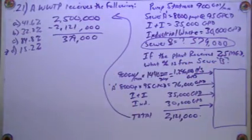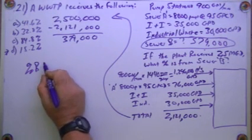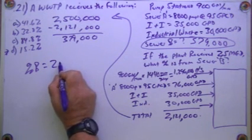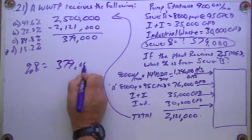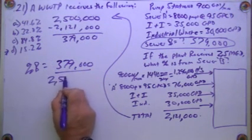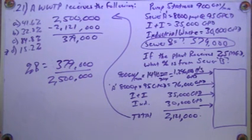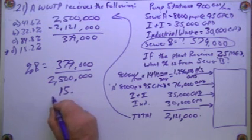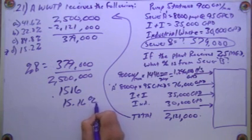But we want to know what percent that is. So the percent of B is going to equal, well, the percent that B uses: 379,000 divided by 2,500,000, and it's going to be 15.15616, which is going to be 15.16%.